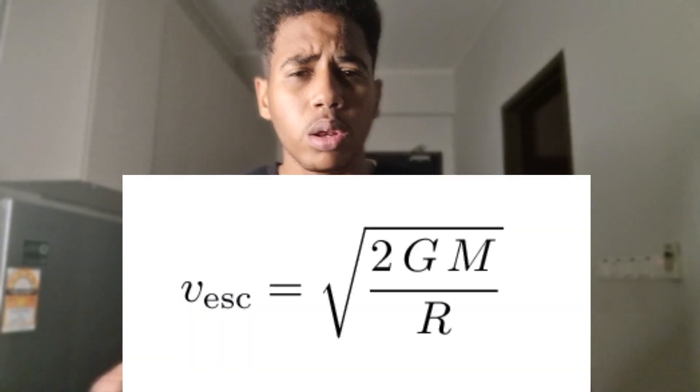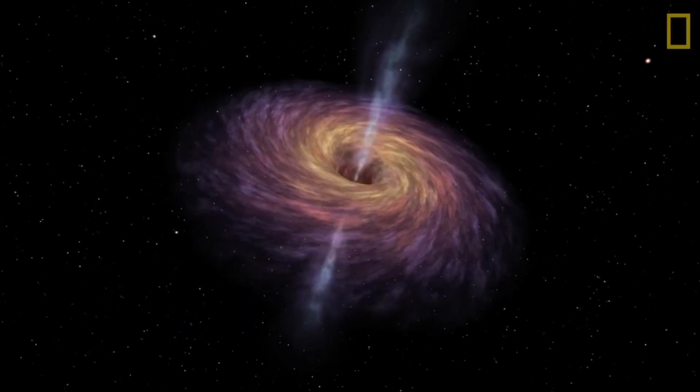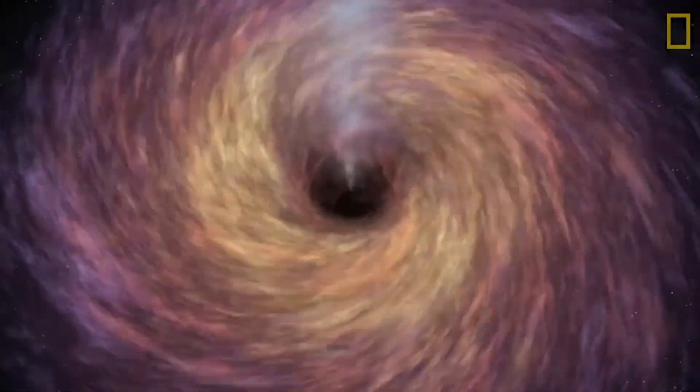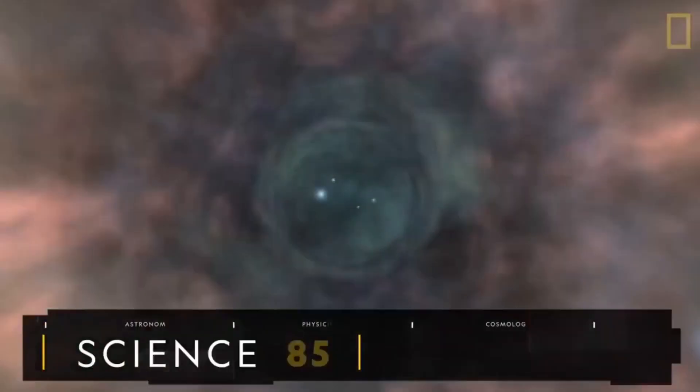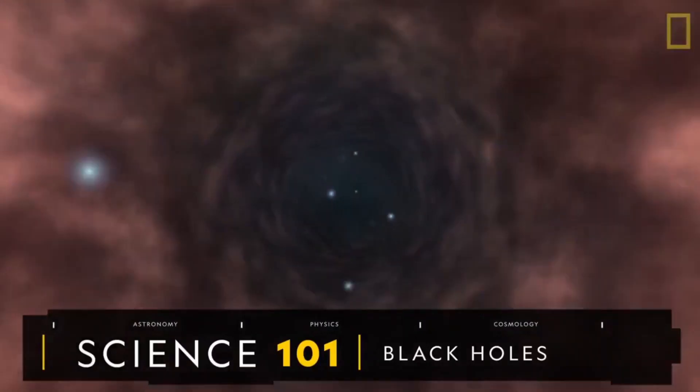It's represented by this equation. Now let's imagine we have a massive star and when it begins to compress, it reaches a point where even light can't escape from it. This radius of the massive object is called the Schwarzschild radius.